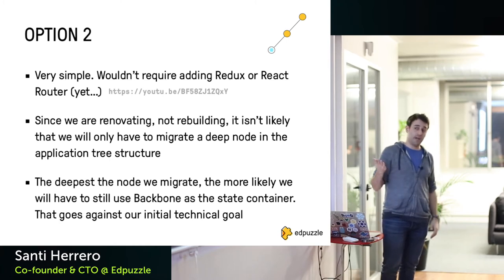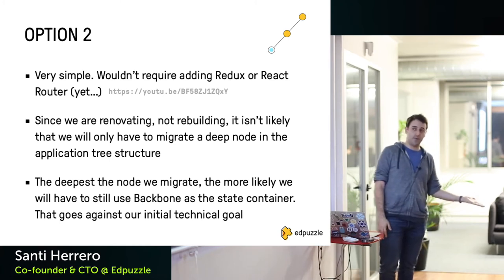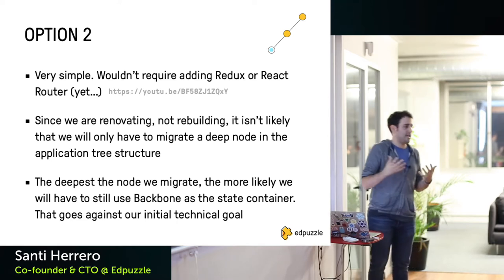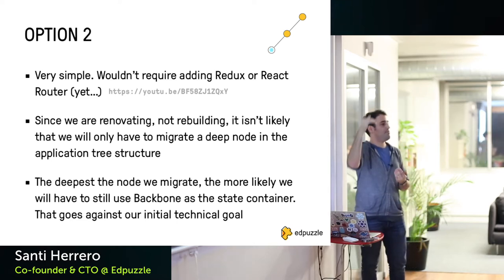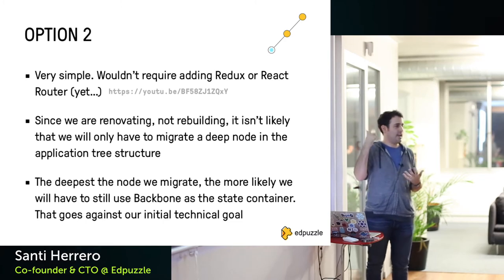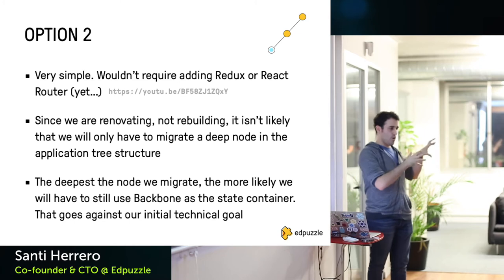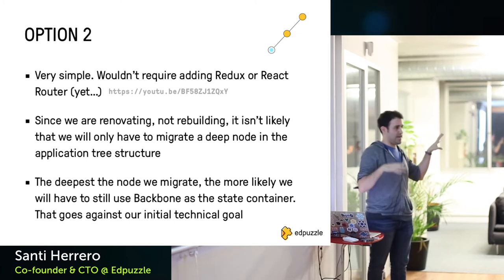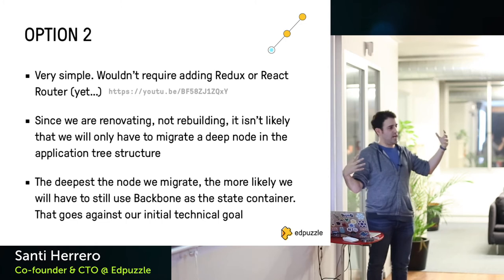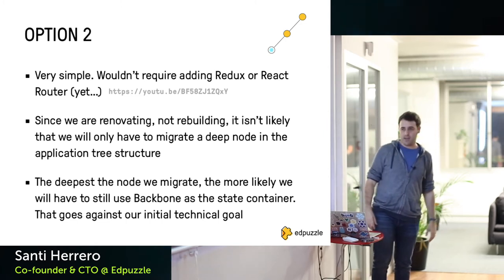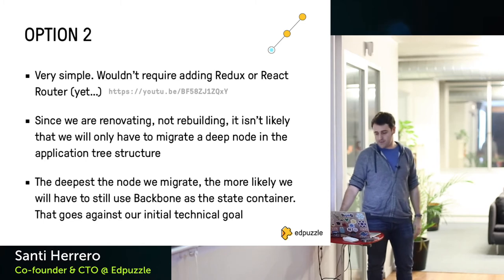One drawback of option two: the deeper the node you migrate, the more likely you'll still need to use Backbone state and pass it down as props. This breaks our technical goal of writing new code as if it were a fresh codebase — you'd have to know both Backbone and React, know where to put what, and that extra context leads to bugs.